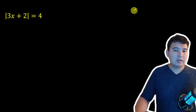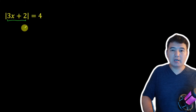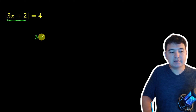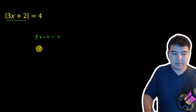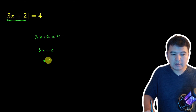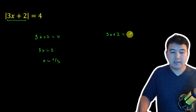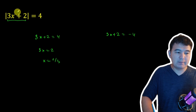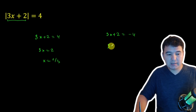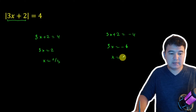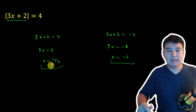This is our first absolute value equation. In absolute value equations, since everything inside the absolute value could be positive or negative, you have to solve two different equations. You solve it as 3x plus 2 equals 4, which gives 3x equals 2, so x equals 2 over 3. But you should also solve 3x plus 2 equals negative 4, because if this is negative 4, the absolute value would make it 4 again. This simplifies to 3x equals negative 6, and x equals negative 2. So this linear absolute value equation has two different solutions.